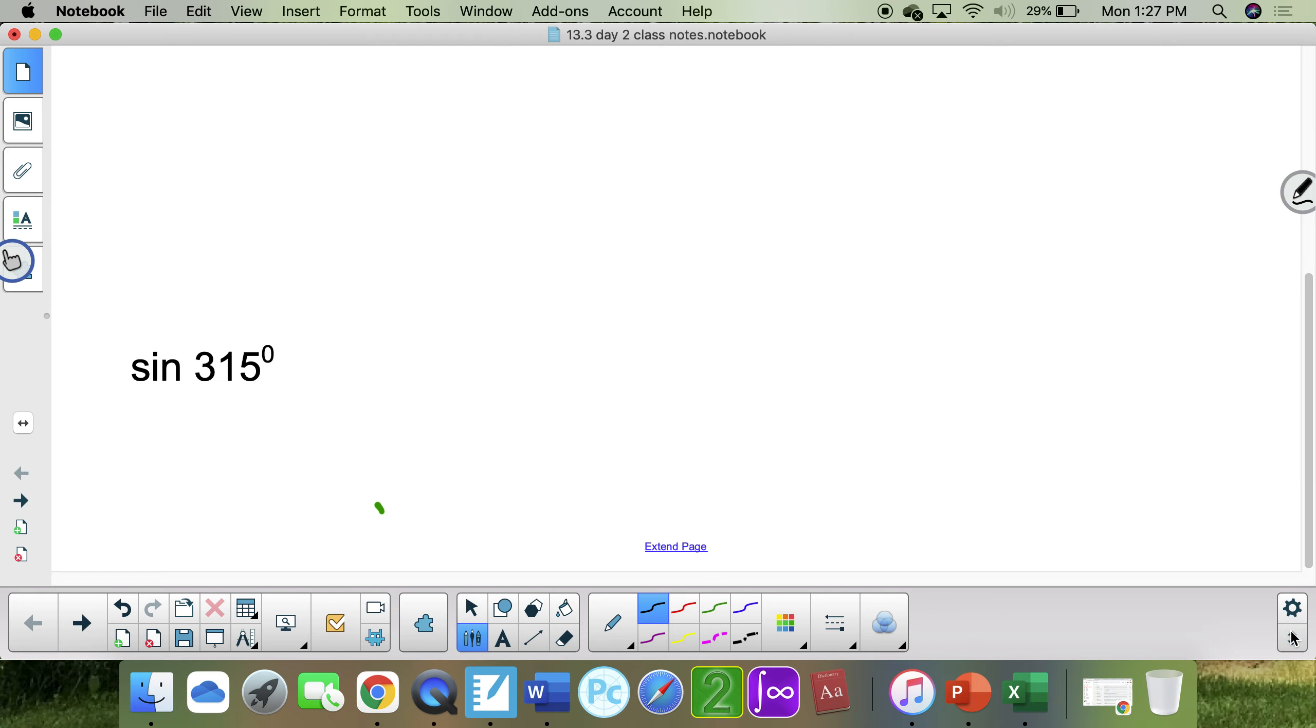What's the sine of 315? Which would put you in this quadrant. This would be 45 degrees. It'd be a 45, 45, 90 triangle. Opposite of 45 is negative 1, because you're in that quadrant. A positive 1, and root 2.